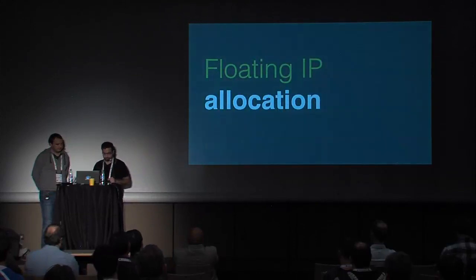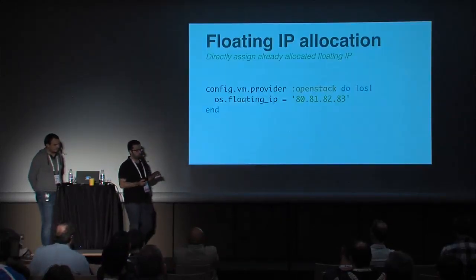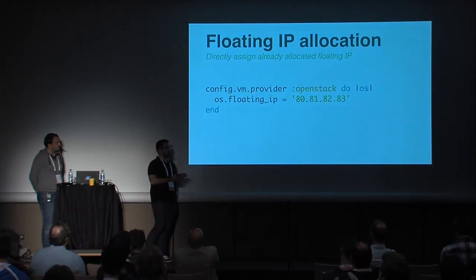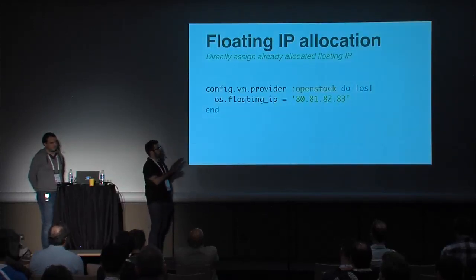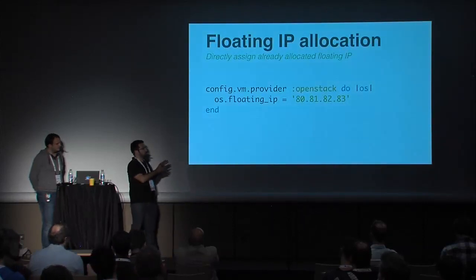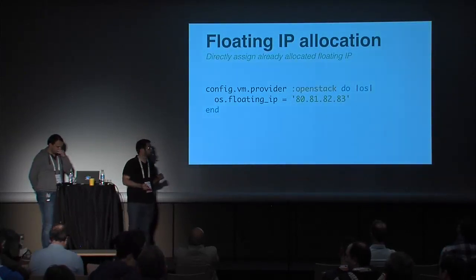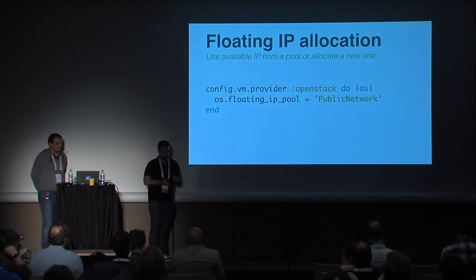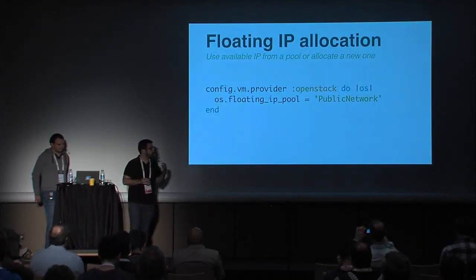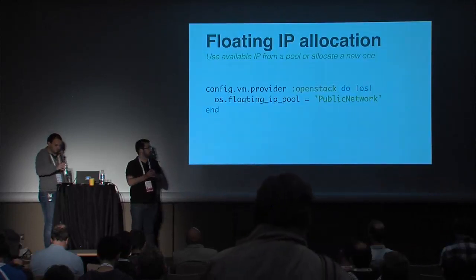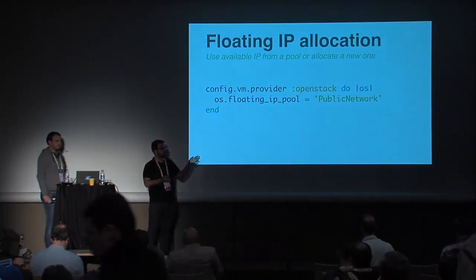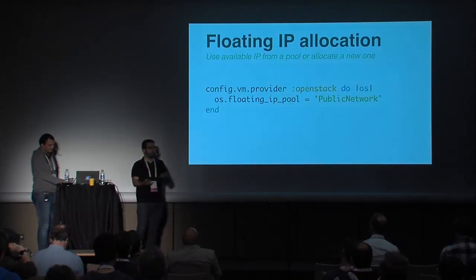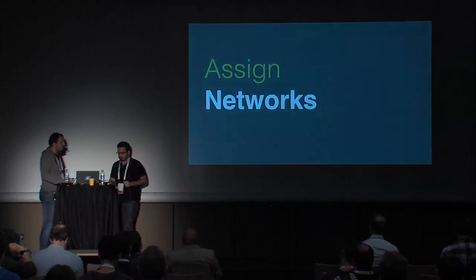The next feature is floating IP allocation. One way is to directly tell Vagrant to use a specific floating IP — it must already be allocated and unassigned in your tenant, and we just assign it to the created instance. The more generic way is to use the 'os_floating_ip_pool' option. We first look for an already-allocated unassigned IP in that pool; if found, we assign it. If not, we allocate a new one. If that fails, the Vagrant command fails.